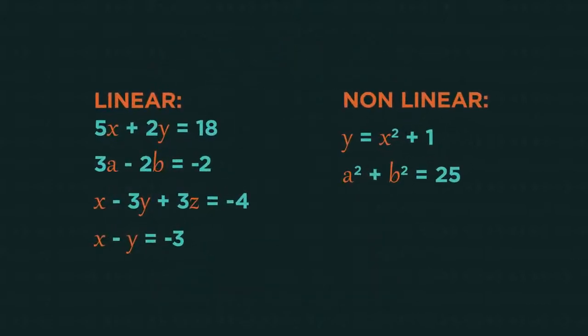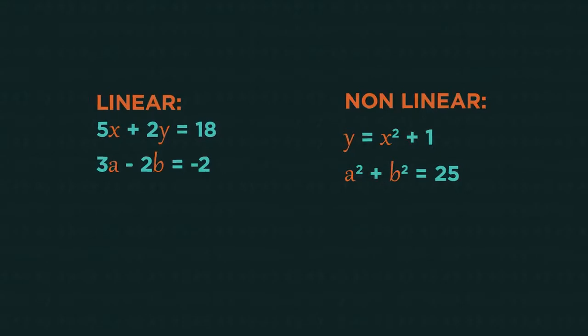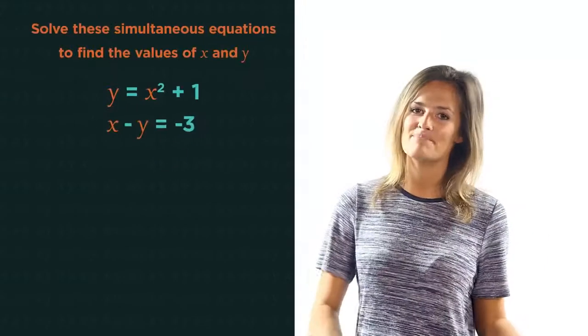Before we start we need to know what linear equations look like. They are equations with an x and a y, or an a and a b, but no squared or cubed letters. So let's look at an example of how to solve simultaneous equations by substitution.